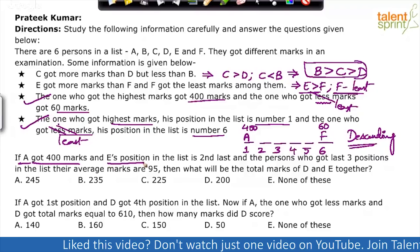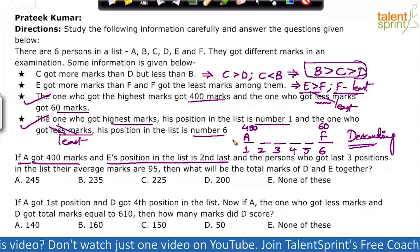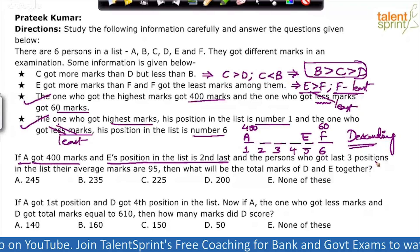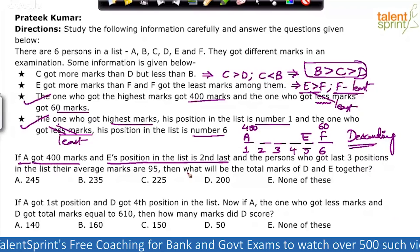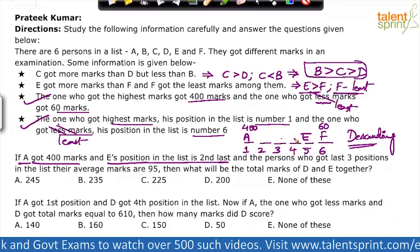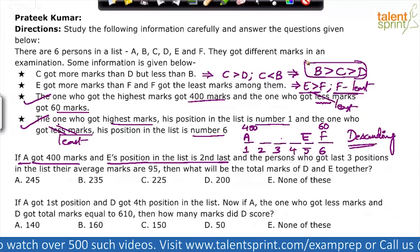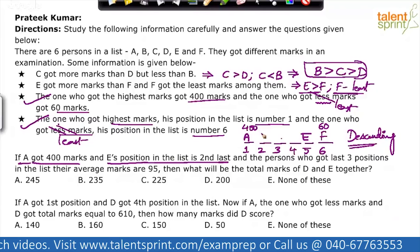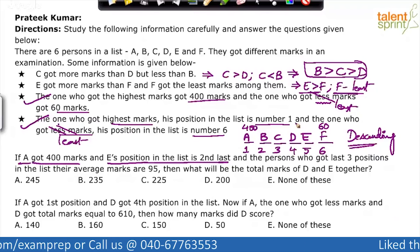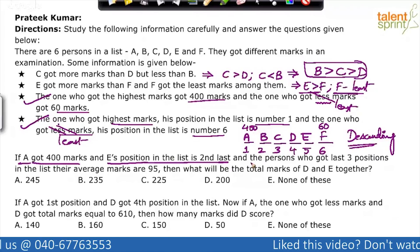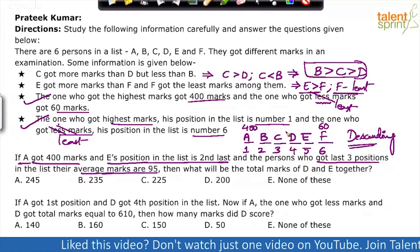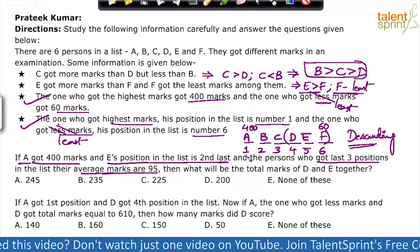Each position in the list is second last — so E comes in position five, and the last position is F. There are only three vacant seats: positions two, three, and four, with three persons left — B, C, and D. We know B > C > D in terms of marks, so B, C, D must fill those positions in that exact sequence. The persons who got the last three positions — D, E, F — have an average of 95 marks.